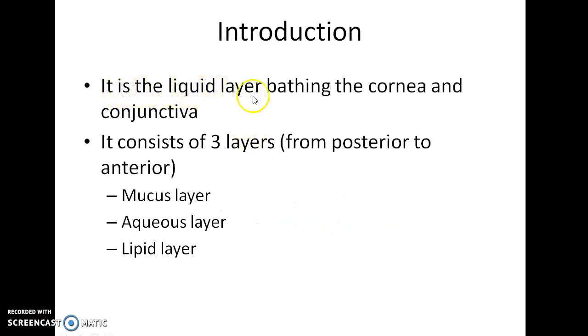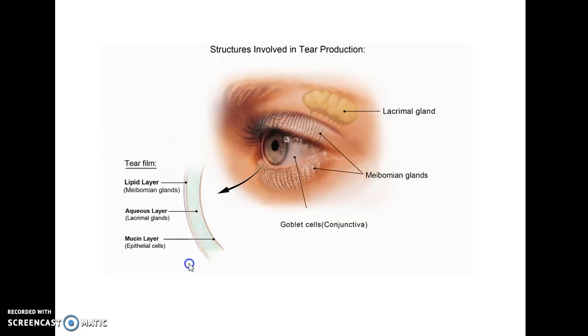Tear film is a liquid layer bathing the cornea and conjunctiva. It consists of three layers from posterior to anterior: the mucous layer, the aqueous layer, and the lipid layer.